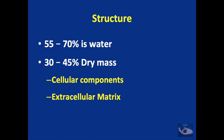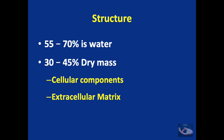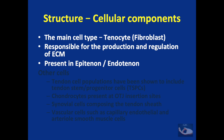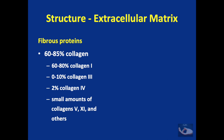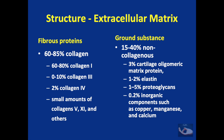Of the tendon, 55 to 70 percent is water and 30 to 45 percent is dry mass. This dry mass consists of cellular components and the extracellular matrix. The main cell type is the tenocyte or fibroblast, responsible for the production and regulation of the extracellular matrix and collagen, present in the epitenon and endotenon. Other cells including tendon stem and progenitor cells, chondrocytes, synovial cells, and vascular cells have also been noted. In the extracellular matrix, 60 to 85 percent is collagen — predominantly collagen type 1 — with smaller amounts of collagen types 3, 4, 5, and 11. The ground substance contains non-collagenous substances like oligomeric matrix protein, elastin, proteoglycans, and inorganic components like copper, manganese, and calcium.